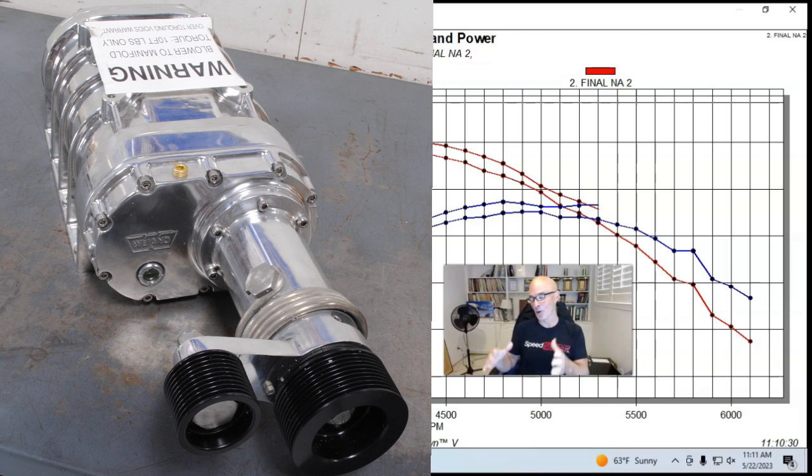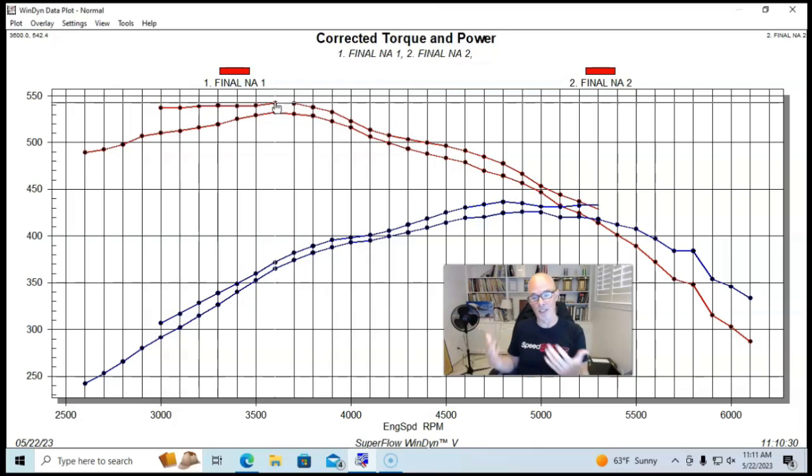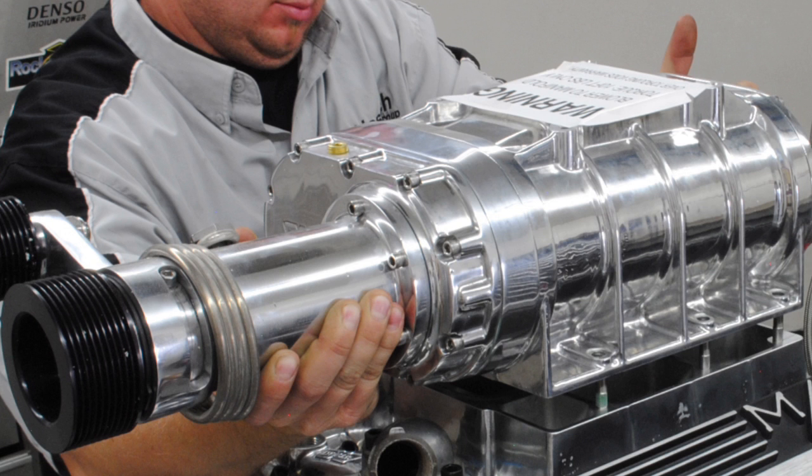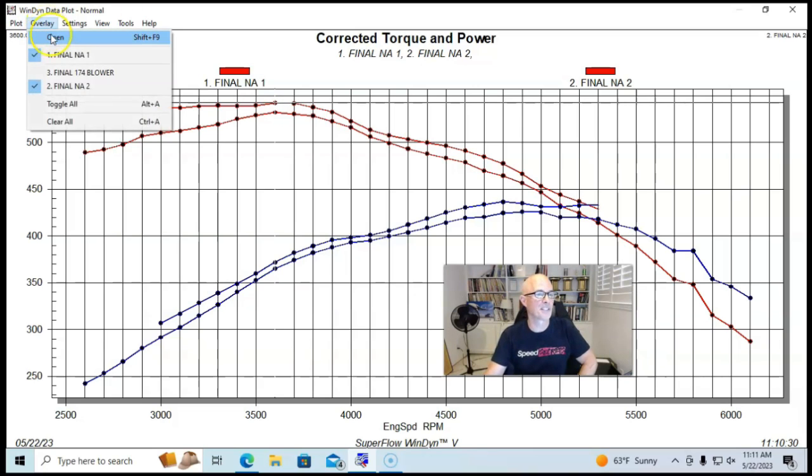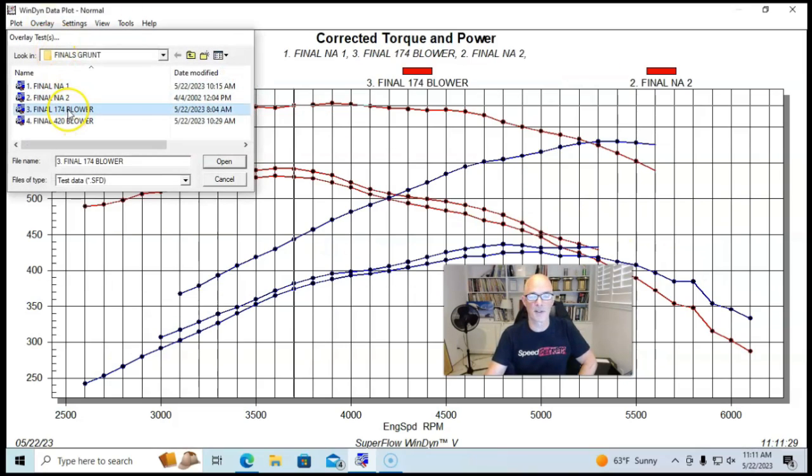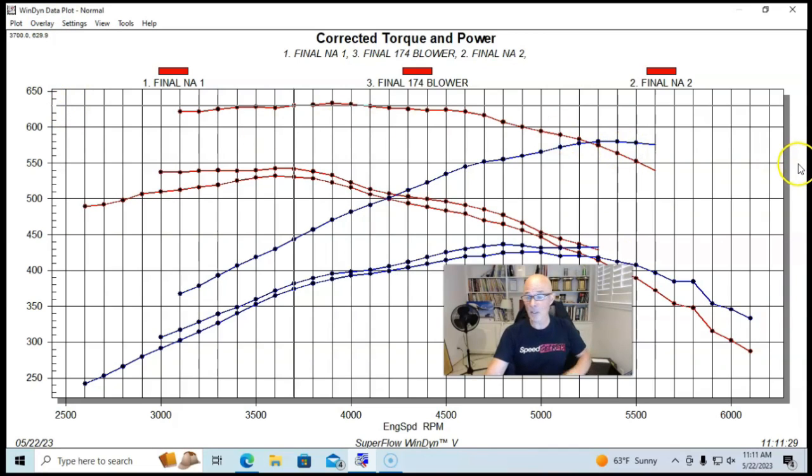Because we had the blower and had run it on our stock motor, we decided let's take a look and see what happens if we put this little 174 blower on here. Can we make it work and will it add any torque? We hope it'll at least add some low speed power, but maybe not climb real hard on the big end. That's why we're on the dyno to find things out.